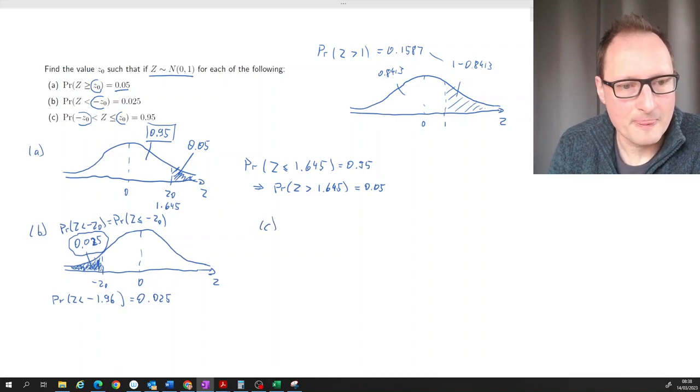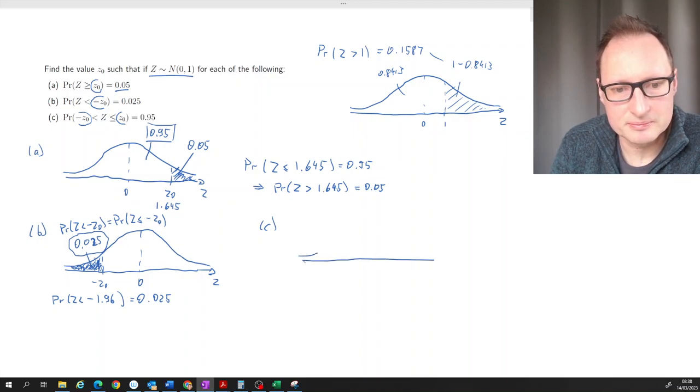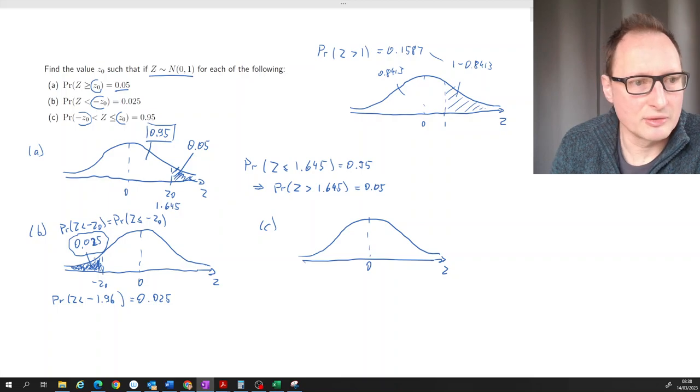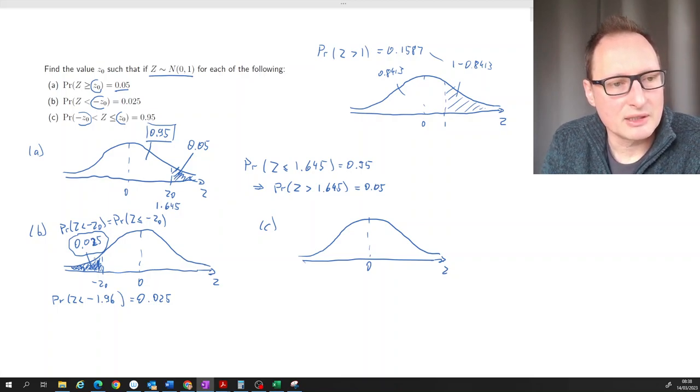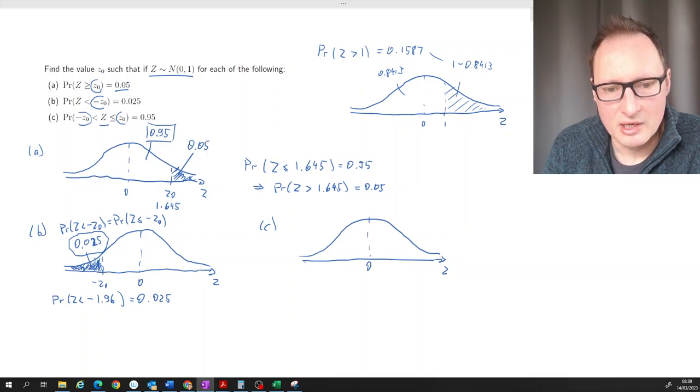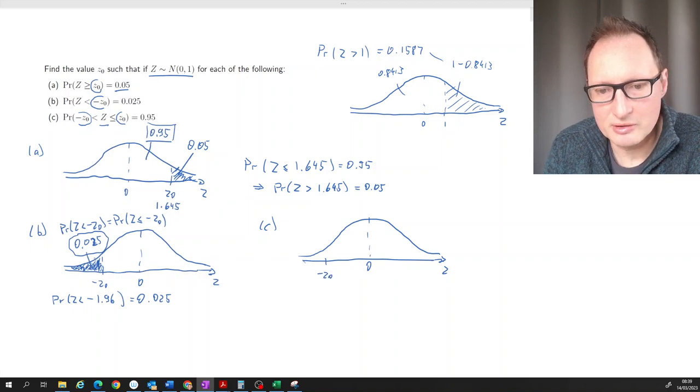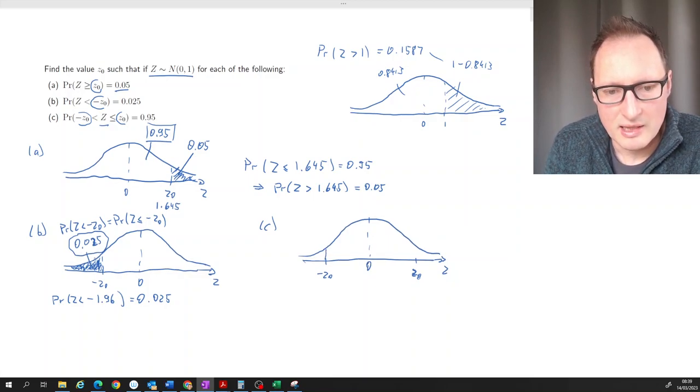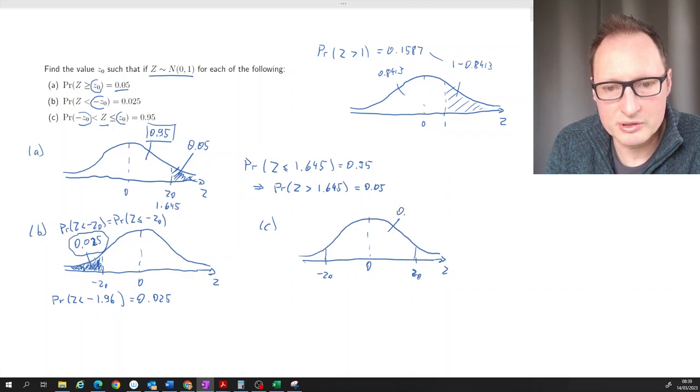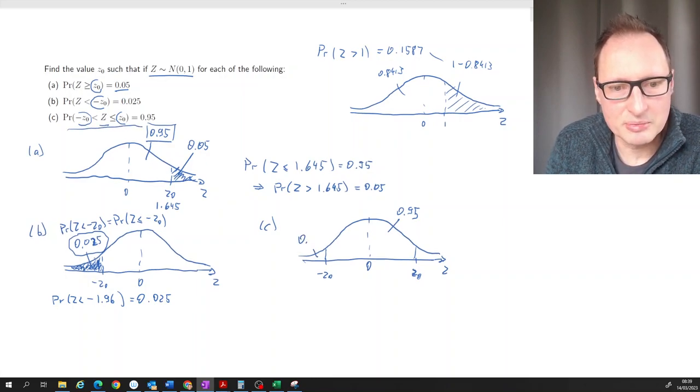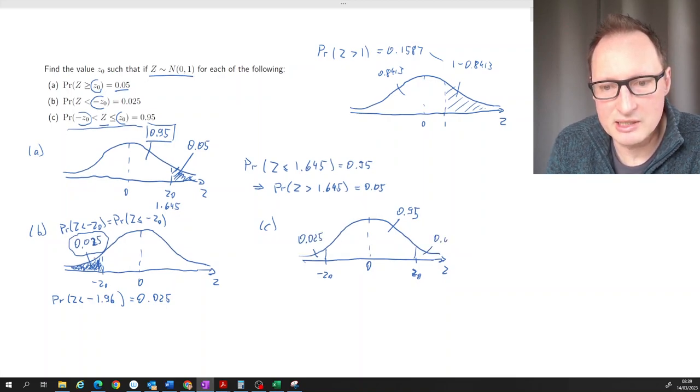Part (c): let's start with a sketch. Symmetric around zero. What's the probability that z between two values, -z₀ and z₀, is 0.95? We want a value here, -z₀ and +z₀ - it's the same value just with a negative sign, and we are symmetric around zero. We want the probability in here to be 0.95. That means the probability here has to be 0.025 because of symmetry, and here it's 0.025 as well.